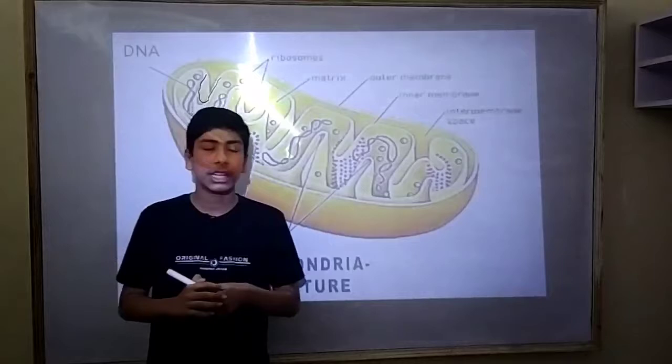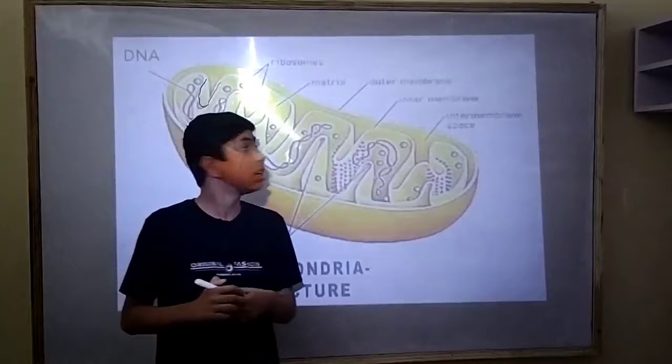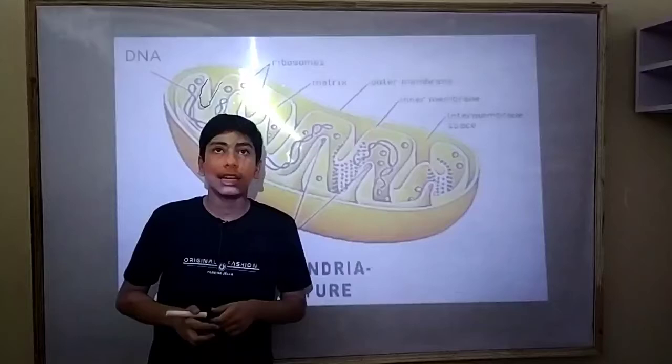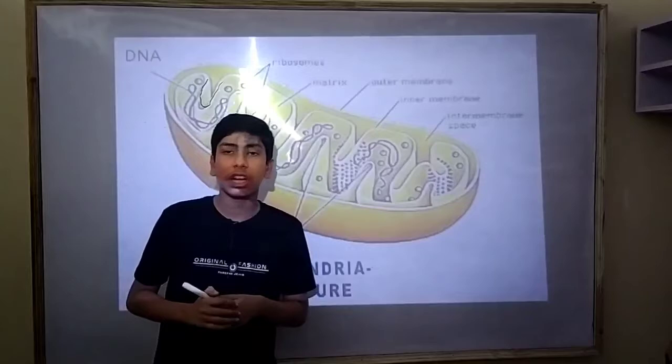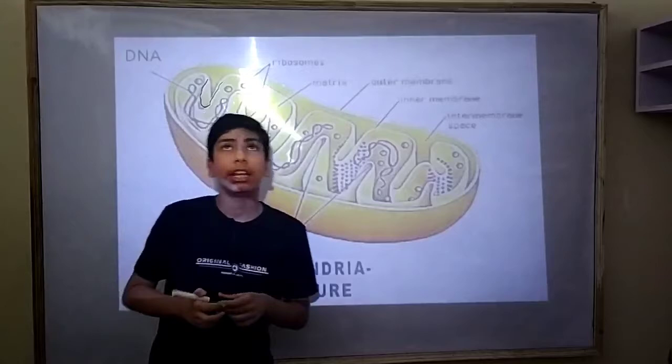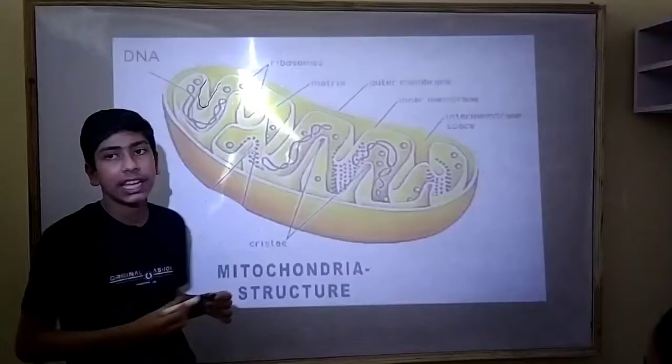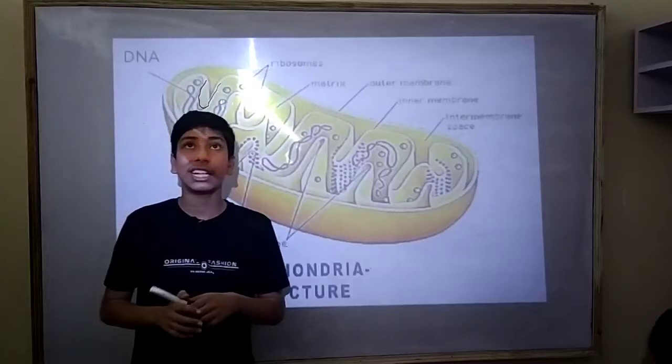This creates a layered structure called cristae. The fluid found in the mitochondria is known as the matrix. Mitochondria have their own ribosomes and DNA, and are also known as the powerhouse of the cell because they provide chemical energy to the cell.